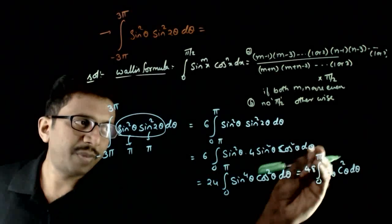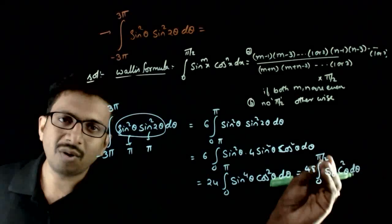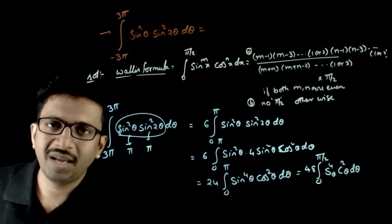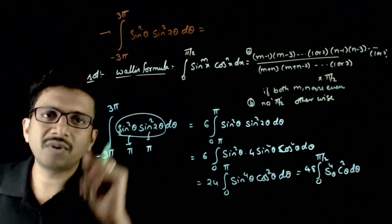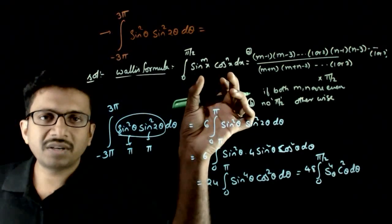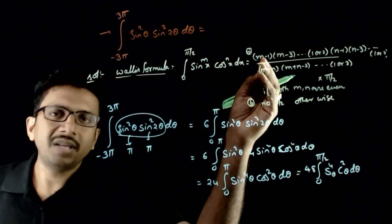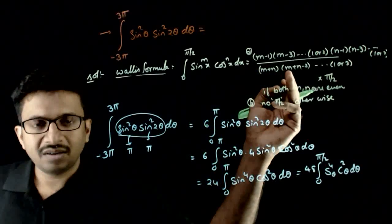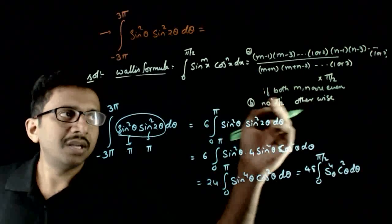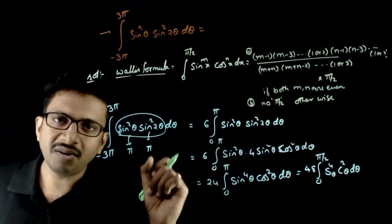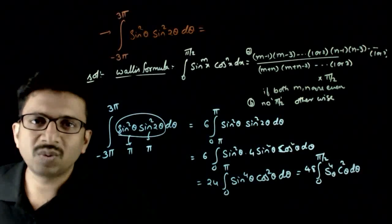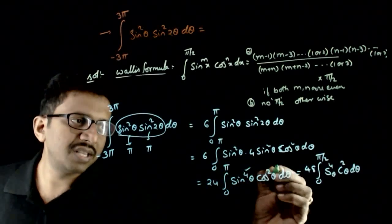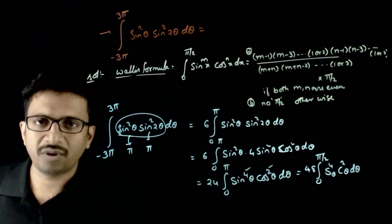This is now of the form of the integral from zero to pi by two of sine power n theta into cosine power m theta d theta, which is a case of Wallis formula. Wallis formula states that the integral from zero to pi by two of sine power m x cosine power n x dx equals the product of m minus one, m minus three, and so on, multiplied by n minus one, n minus three, and so on, all divided by m plus n, m plus n minus two, and so on — times pi by two if both m and n are even. There is no pi by two factor if at least one of m and n is odd.